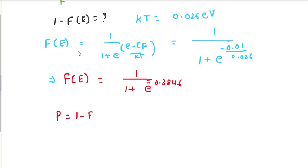So the probability evaluation gives F(E) = 0.2595. That implies the probability of not being occupied is 1 minus 0.2595, which equals 0.405. This is the answer. Thank you.